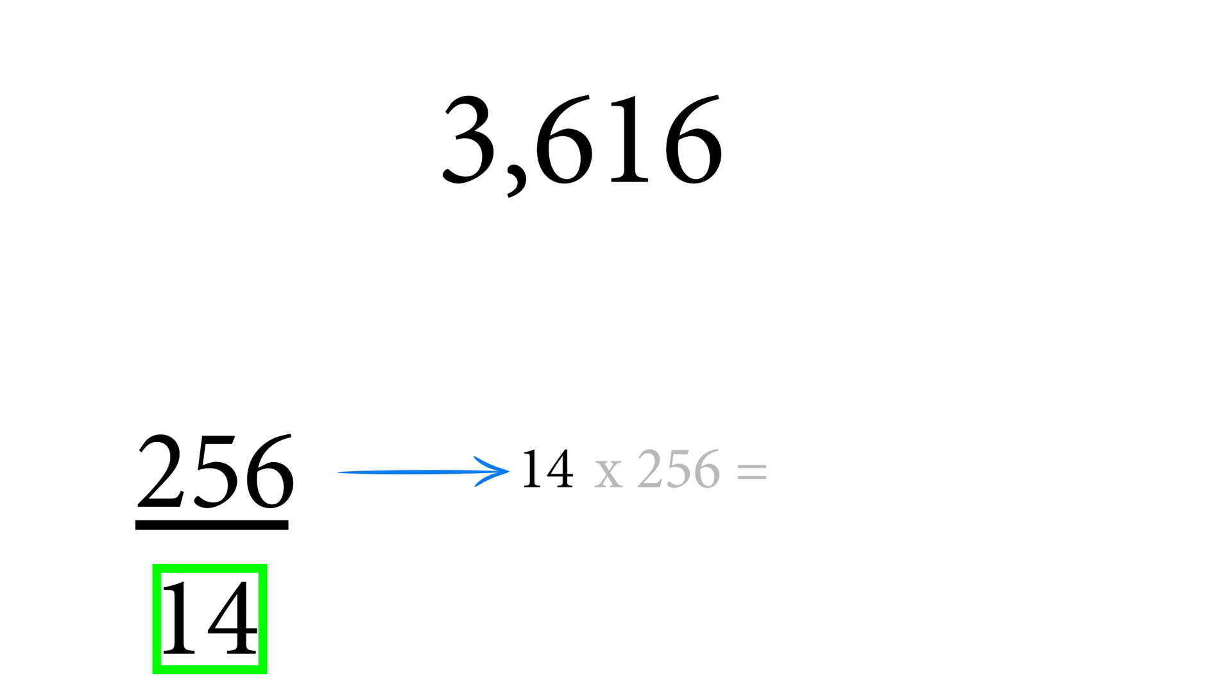If you take that 14 and you actually multiply it by 256, you end up getting 3584. Again we're just going to take our value of 3616 and subtract whatever that gave us, and 3616 subtracted by 3584 is 32. So now we just repeat the cycle once again.